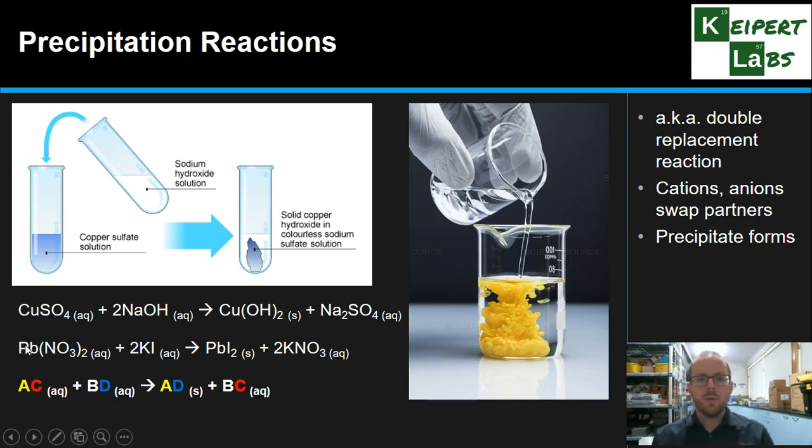And likewise over here, we've got lead nitrate and potassium iodide mixed together. We've formed a lead iodide precipitate in a colourless potassium nitrate solution. So our cations and anions have swapped places.